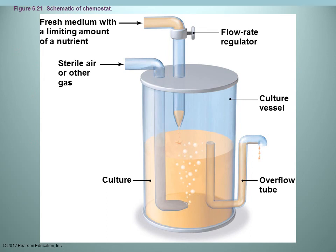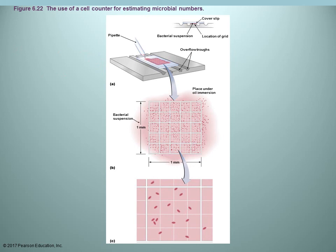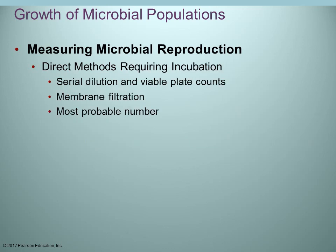The chemostat allows you to add air or gases as necessary, add nutrients, and has a release valve to withdraw fluid and pull off the product you want. There are different ways of measuring microorganisms. Direct methods include microscopic counts — using special slides with a grid, placing a known volume on them, counting, and calculating cells per milliliter. There are also electronic counters that measure the amount of light passing through a culture or measure electrical currents.